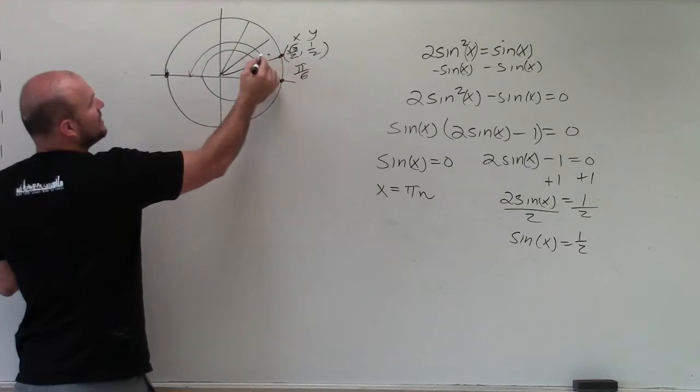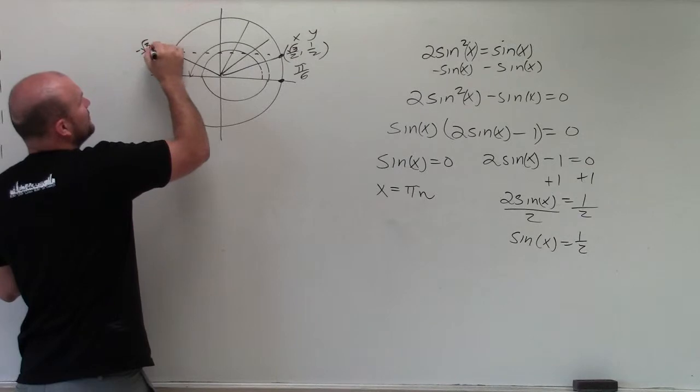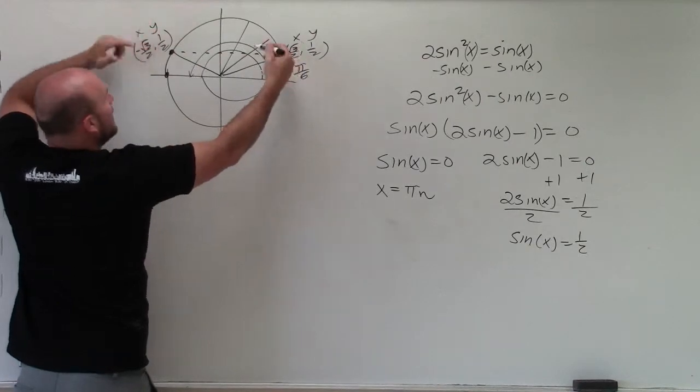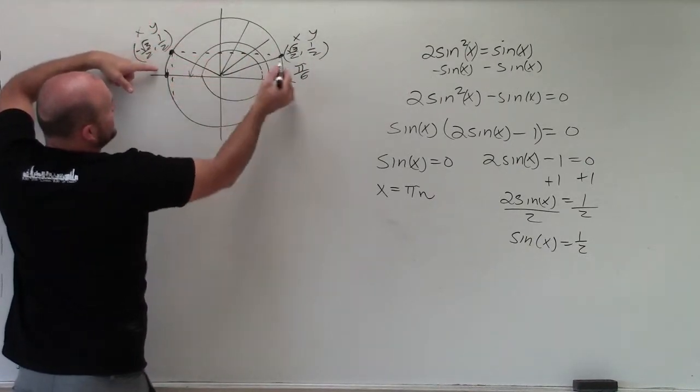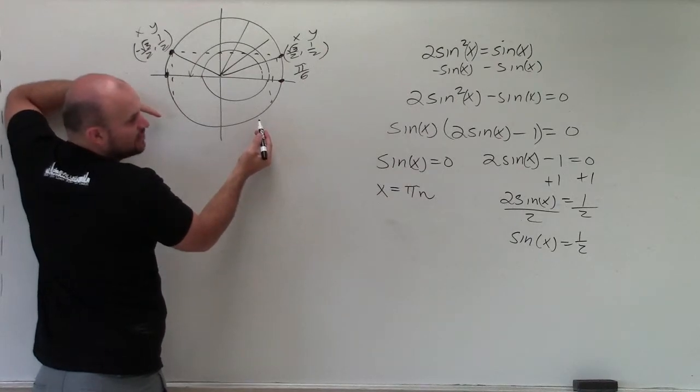Then, however, we also have to look at the reflection, which would be this angle over here, which is now negative square root of 3 over 2 comma 1 half. Because they both have a y coordinate of 1 half. If I do any other reflections in the third and the fourth quadrant, it's going to be a negative 1 half. So it's not going to be a part of our solutions. And remember, we're trying to determine all of the solutions.